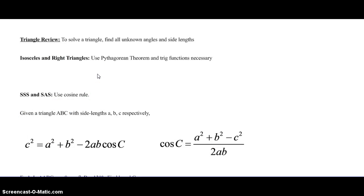Our first topic is talking about triangle review. We want to be able to solve a triangle, find all unknown angles and side lengths. When you have isosceles and right triangles you're going to be using the Pythagorean theorem and trig functions as necessary. Remember from our first class, Pythagorean theorem a² + b² = c². We also used our knowledge of SOHCAHTOA where sine equals opposite over hypotenuse, cosine is adjacent over hypotenuse, and tangent is opposite over adjacent.